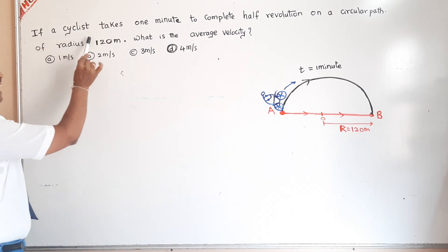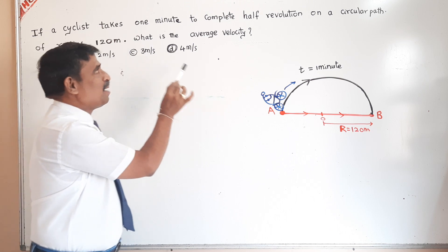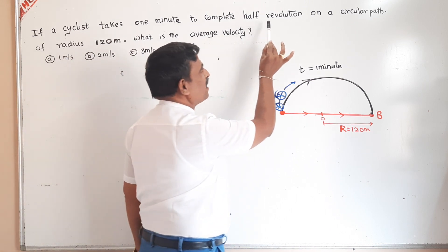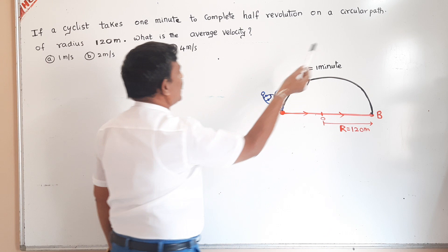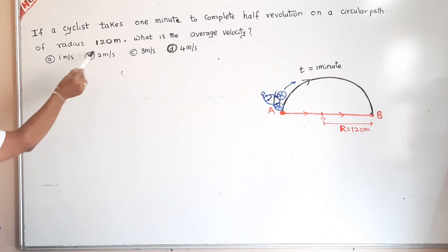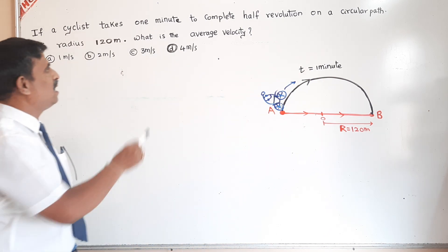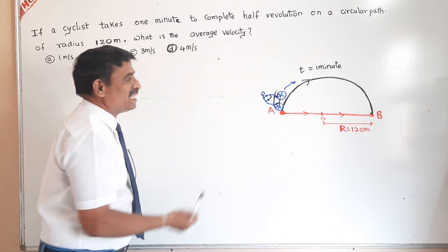If a cyclist takes one minute to complete a half revolution on a circular path of radius 120 meter, what is the average velocity?